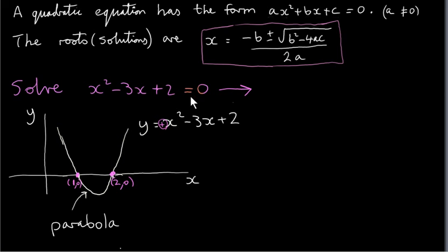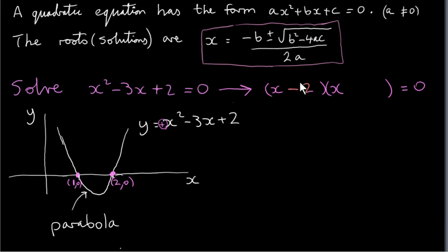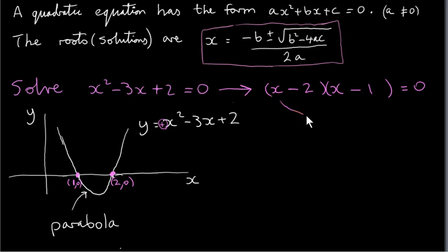We could have also solved this equation by factorizing it — we could have got the factors of this quadratic expression. We have x and x because x times x gives us x squared, then we get the factors of plus 2. The correct ones for this equation are minus 2 times minus 1, which gives plus 2. To check the middle term, multiplying the inner terms gives minus 2x, and multiplying the outer terms gives minus 1x. Combining these, we get minus 3x, which is indeed the middle term.